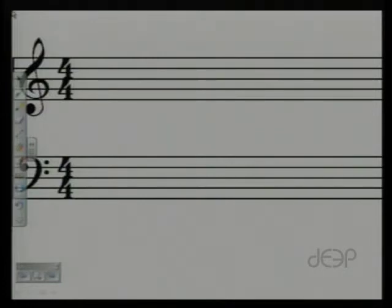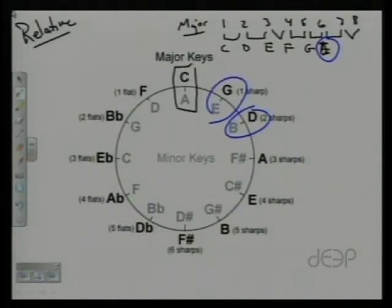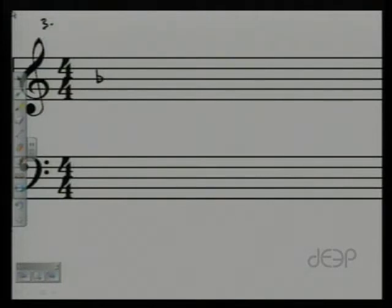Basically, if you look at the assignment in part one, let's look at number three to start. It gives you a key signature in treble clef of one flat and it simply asks you to name the major key and the minor key. So we refer back to our circle of fifths, and if we find one flat, and here it is, we can see very quickly that one flat is F major and D minor. So simply write F major and D minor and that one is done correctly. That's number three.